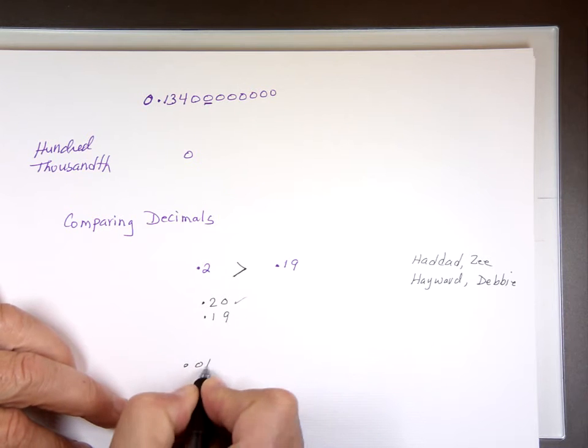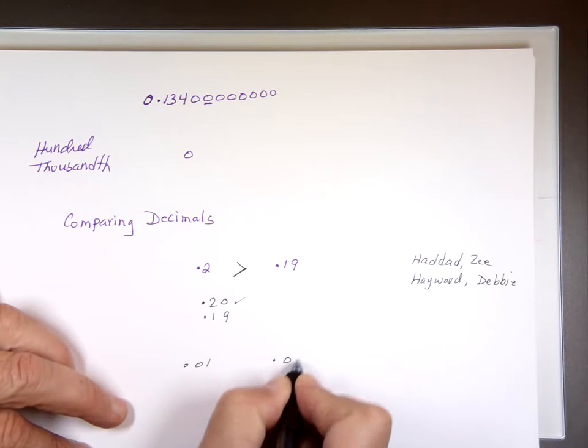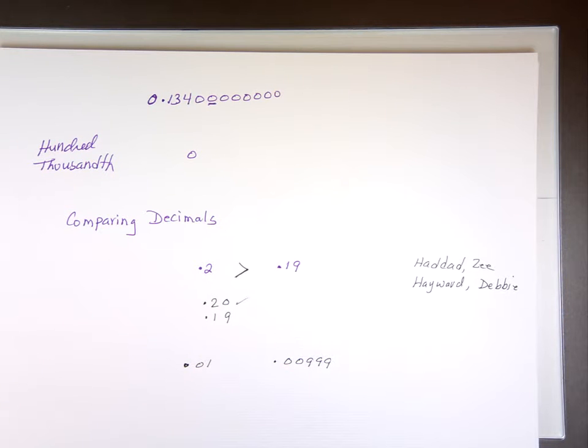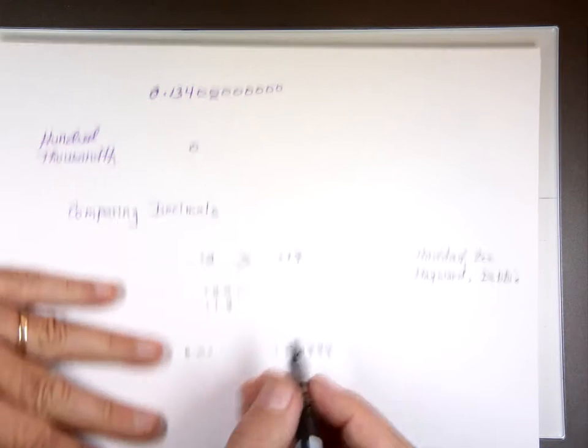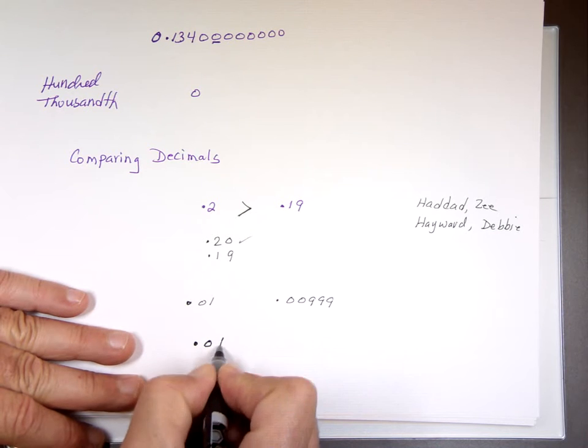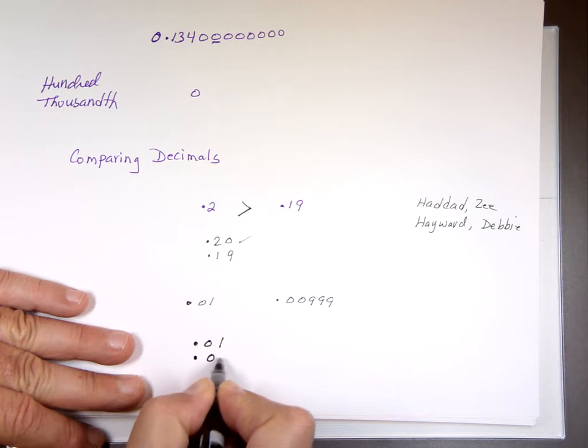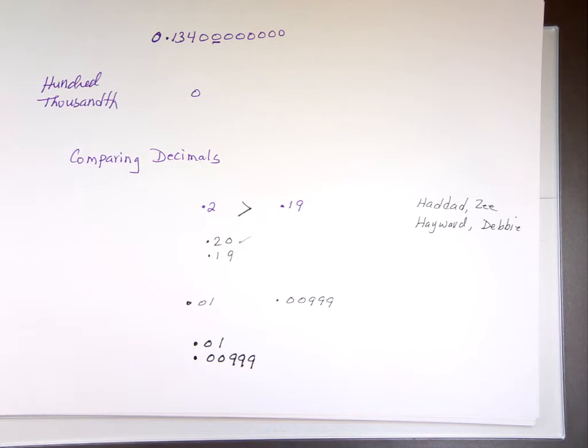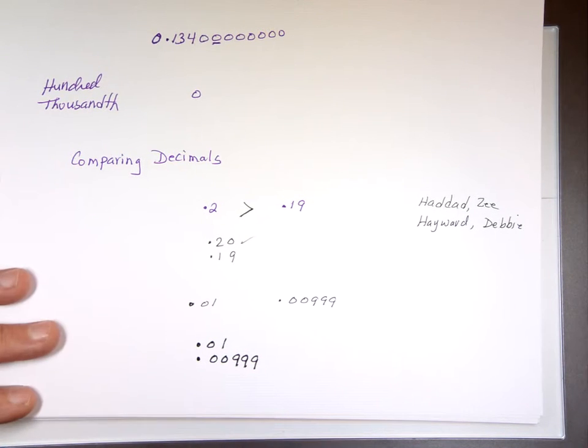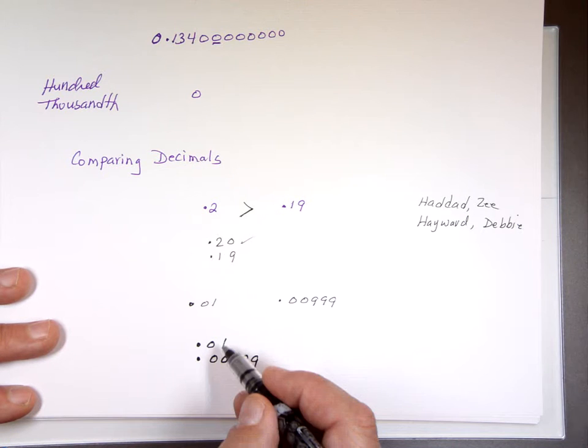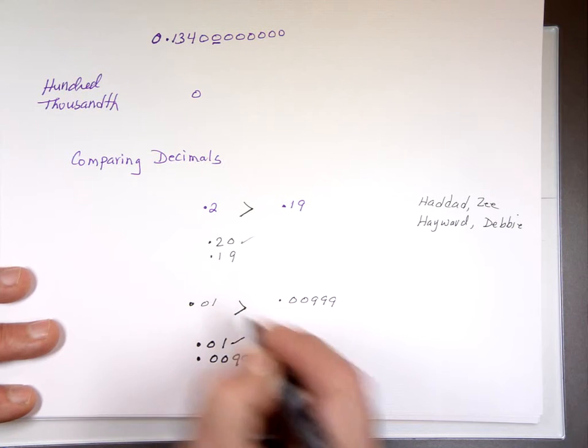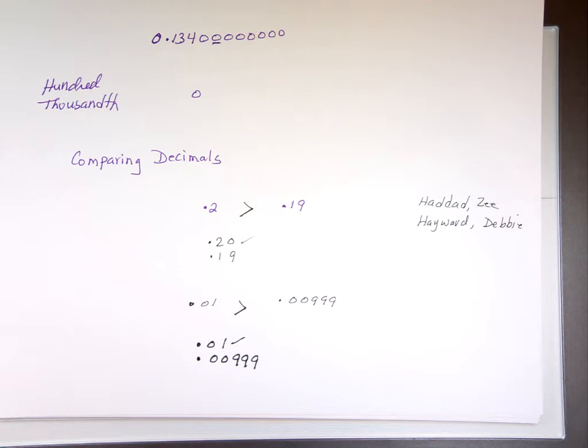0.01 and 0.00999. Which one is bigger? Again, we can put them on top of each other so we can look at them. And you align the decimal point. Now, you can make them the same size or leave them alone. But when you look here, the second digit, the first one the same. The second one, 1 versus 0. Which one's bigger? The 1. So, 0.01 is bigger than 0.0099.